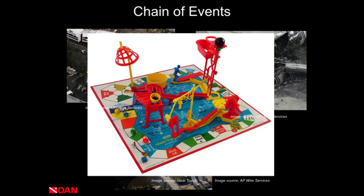Dive accidents in general — it doesn't matter what type of diving you're doing, whether it is public safety diving or just recreational — there typically is a chain of events or a sequence of events. You rarely see things such as train crashes, plane crashes, other major events being caused by one single item. Oftentimes there was a sequence or chain of events which produced the final outcome. The same happens with diving. If you can focus on trying to break one of the links in this chain, you can often prevent the end result.